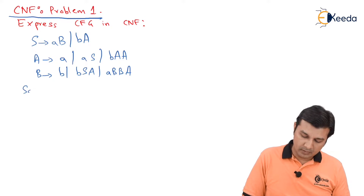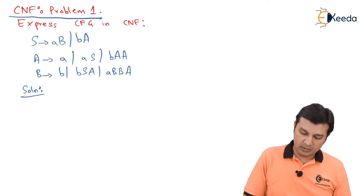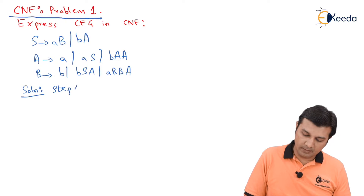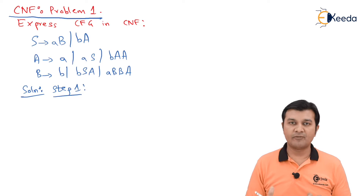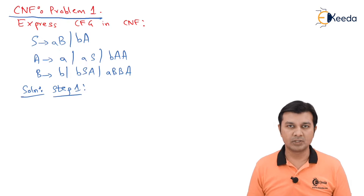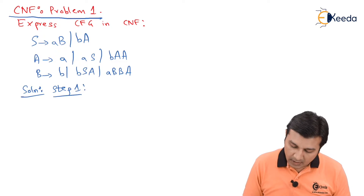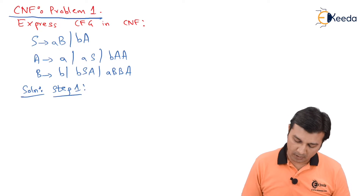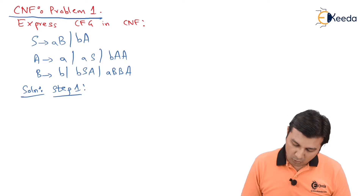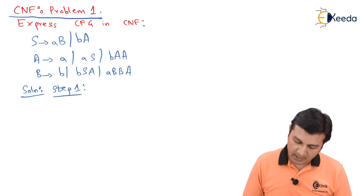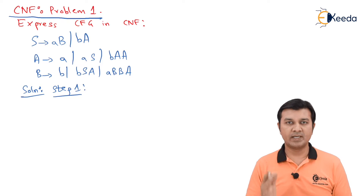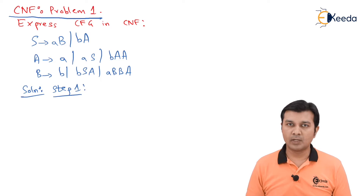Step one for this problem is to perform elimination of null, unit, and useless productions. Let us identify null productions. There are no variables generating epsilon, so there are no null productions.